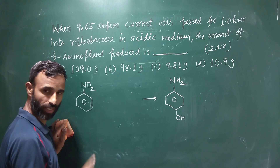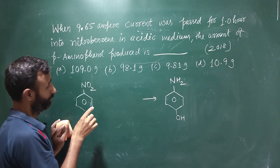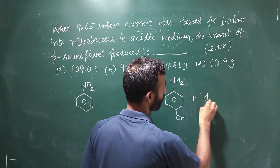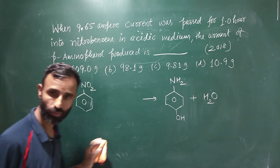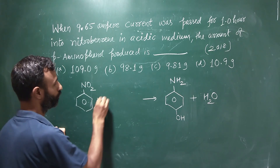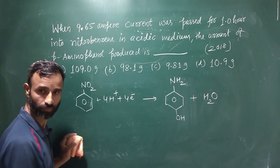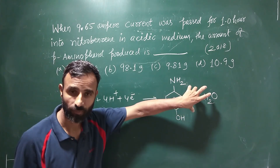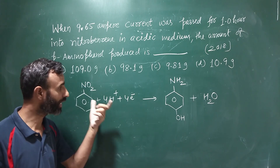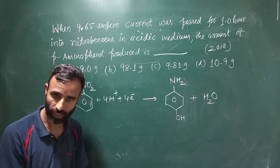Nitrogen is 1 to 1, carbon is balanced, but oxygen is 1 to 1. So we get 4H+ plus 4 electrons. Look, if nitrobenzene becomes aniline, then 6 electrons come, but here it has made para-aminophenol, so 4 electrons come.